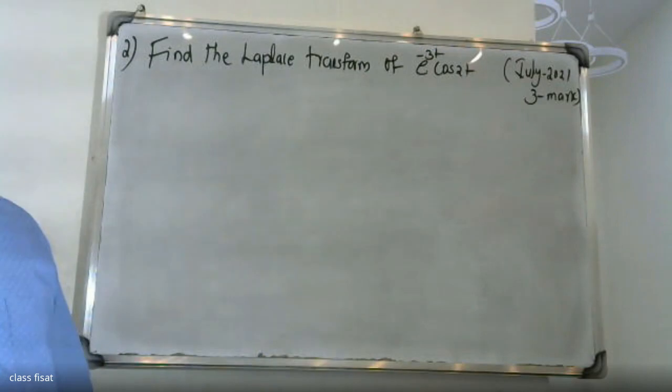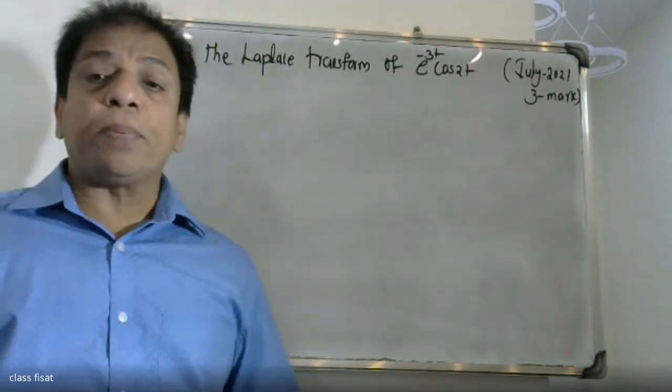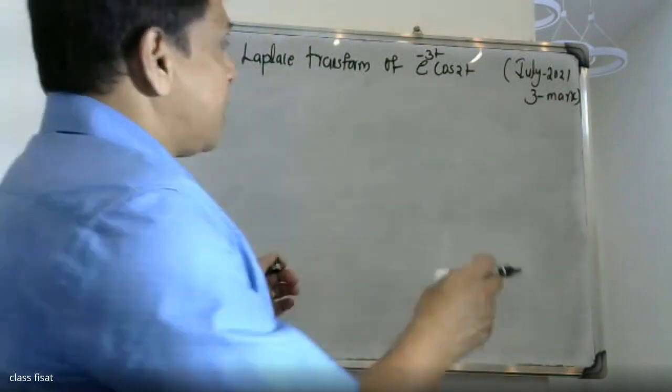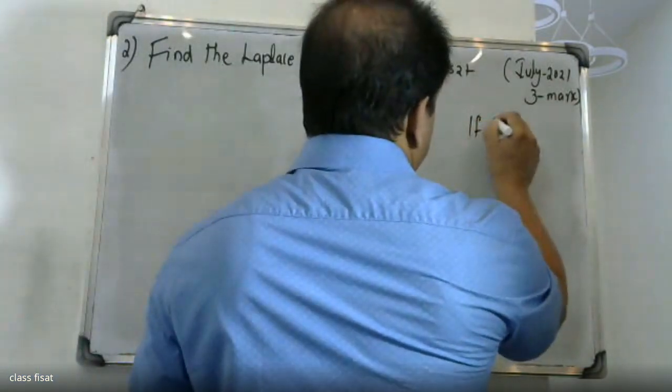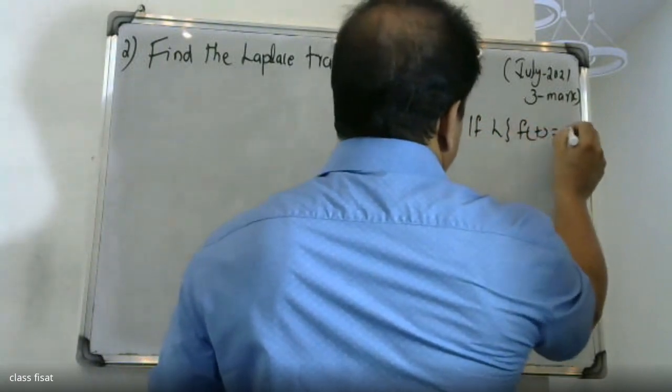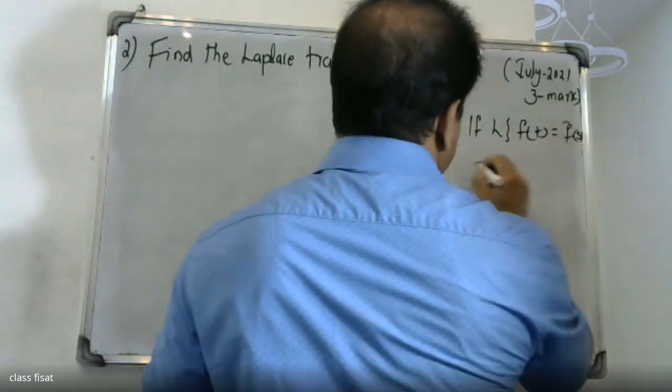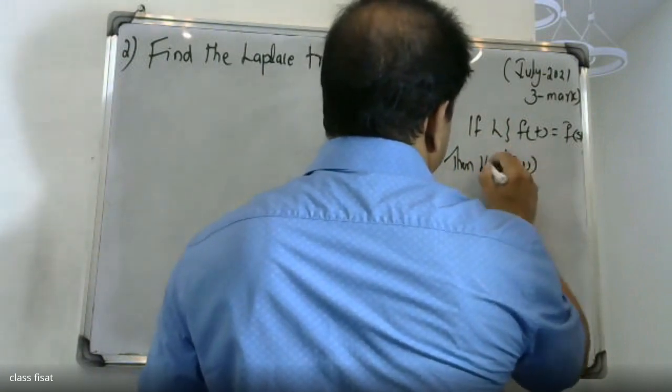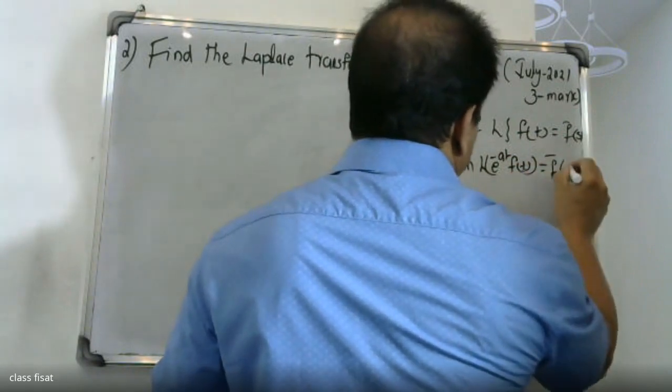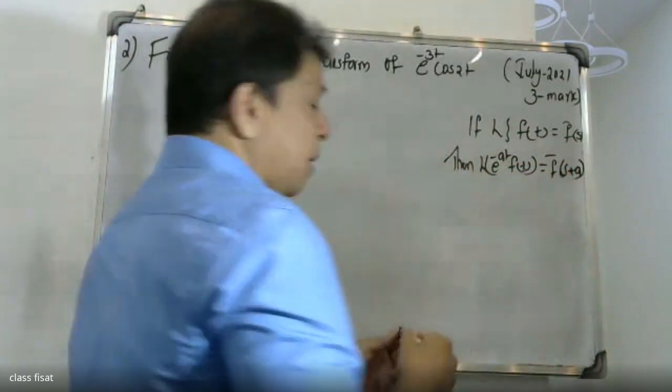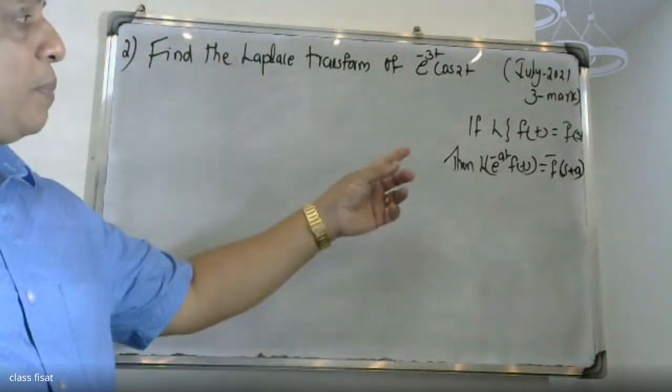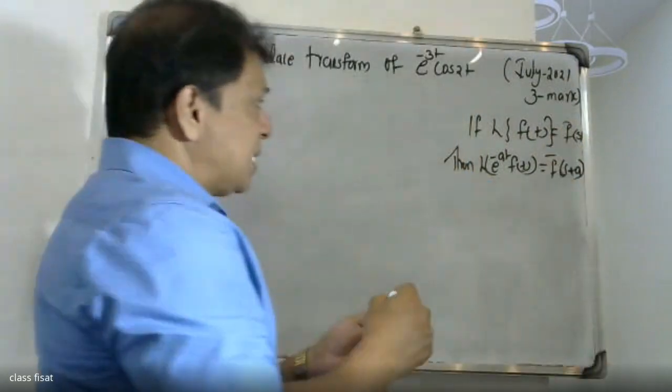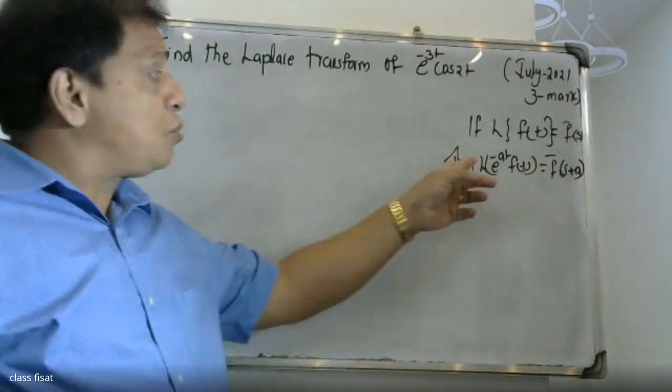For this problem, we apply a property called the first shifting property. The first shifting property states: if L of f of t equals f bar, then L of e raised to minus at times f of t equals f bar of s plus a. In this property, L of f of t is a function in the Laplace transform, f bar is its transform, and we have the function with e raised to minus at.